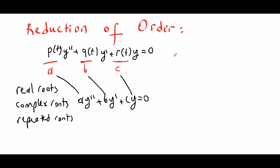In this section, reduction of order, our p(t), q(t), and r(t) are not constants. These kinds of differential equations can be much more difficult to solve compared to constant coefficient differential equations. However, if we know one of the solutions, y1(t), then we can find y2(t) and the general solution using reduction of order.